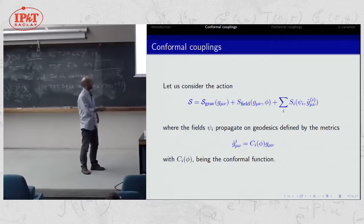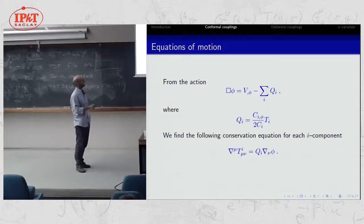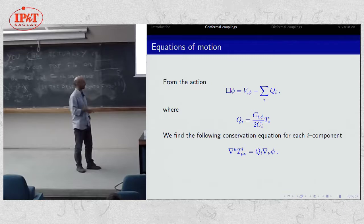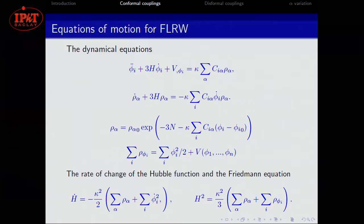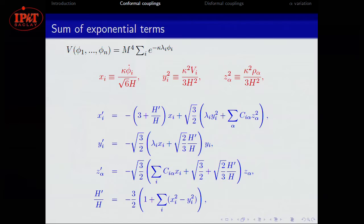Everybody knows what conformal coupling is. There's a metric where particles propagate, related to the gravitational metric by a conformal function. The equations of motion are written the usual way but with this coupling, written in terms of the logarithmic ratio of the conformal coupling multiplied by the trace of the stress-energy tensor. And this gives conservation of the other fluids.